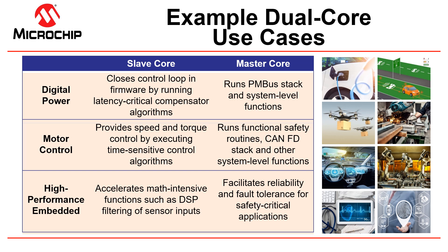In a motor control application, the slave can execute the speed and torque control while the master adds functional safety and CAN-FD communication. Similarly, a high-performance application can use the slave for math-intensive filtering of sensor signals while the master undertakes reliability and fault tolerance functions.